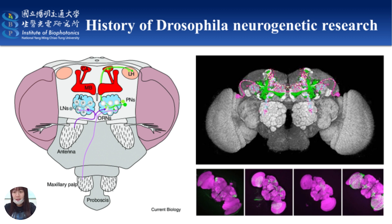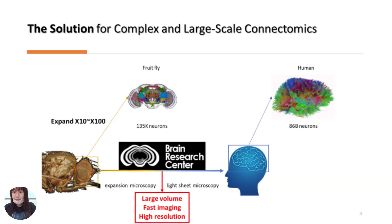Today, techniques for functional analysis of neural circuits are being developed at a breathtaking speed. The Drosophila is a genetic model organism for studies on the function of the brain and control of behavior. Combined with detailed studies on the development and structure of the Drosophila nervous system, we want to find the balance between resolution and sample volume as a brain research center.